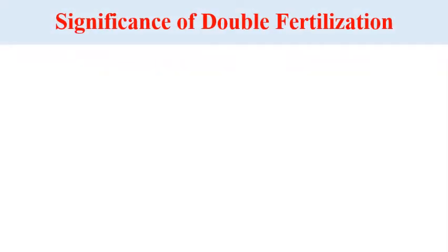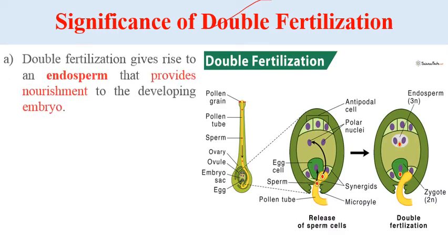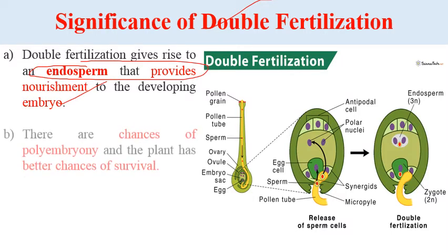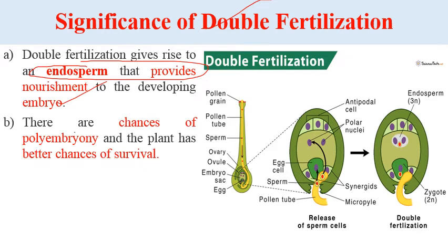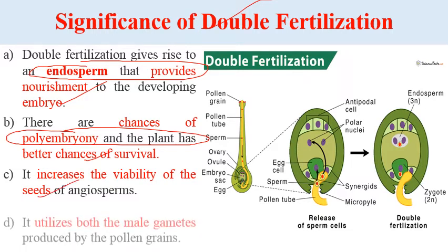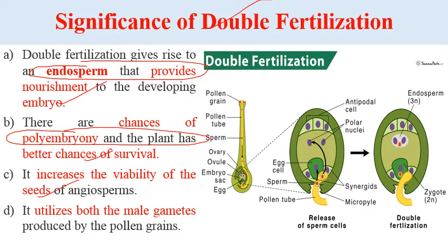The significance of double fertilization includes: it gives rise to endosperm that provides nourishment to the developing embryo; there are chances of polyembryony and the plant has better chances of survival; it increases the viability of seeds of angiosperms; and it utilizes both male gametes produced by the pollen grains.